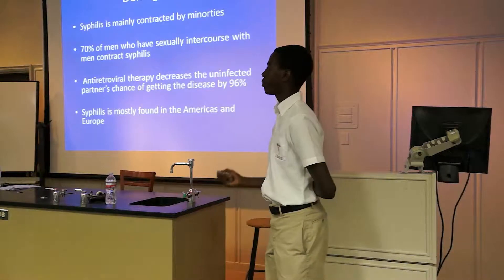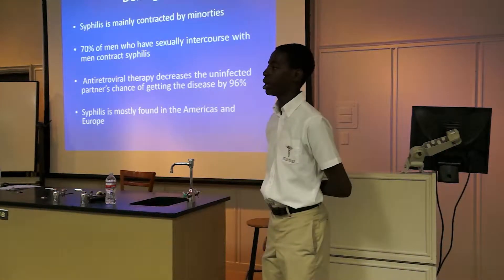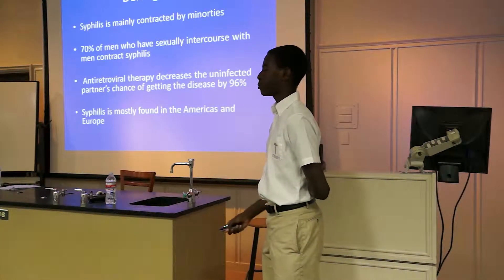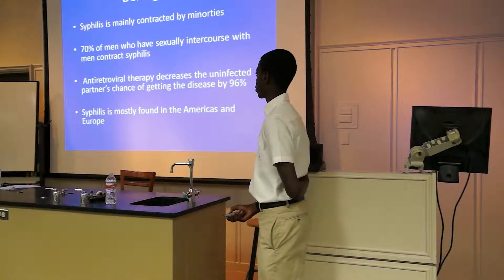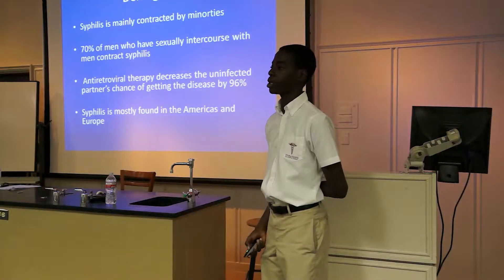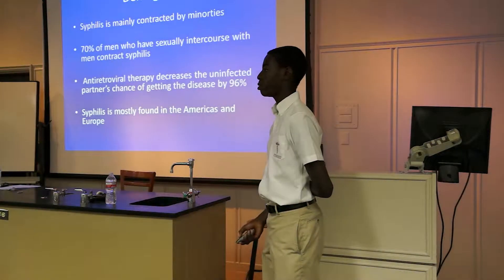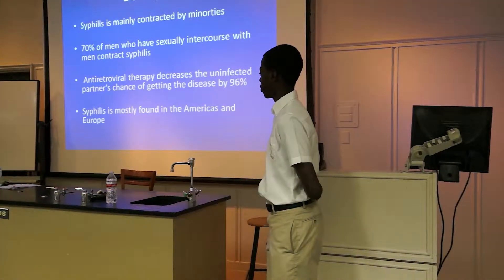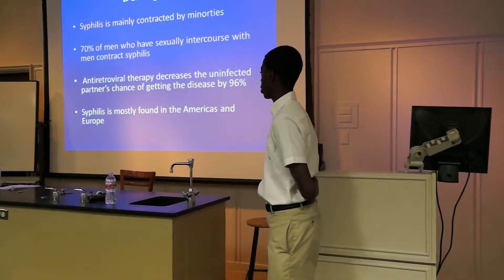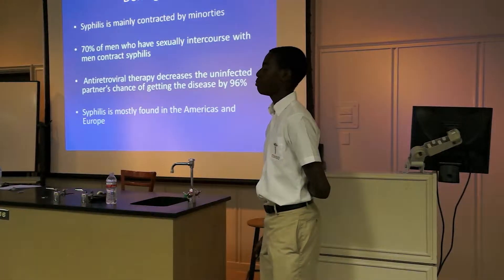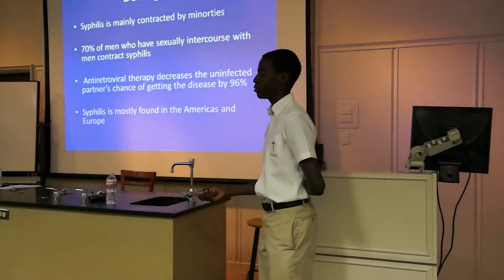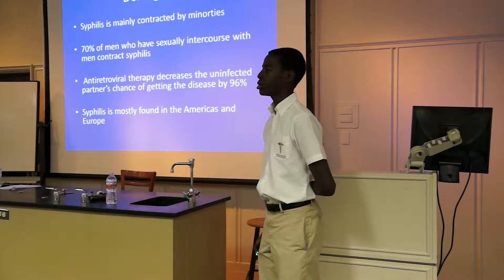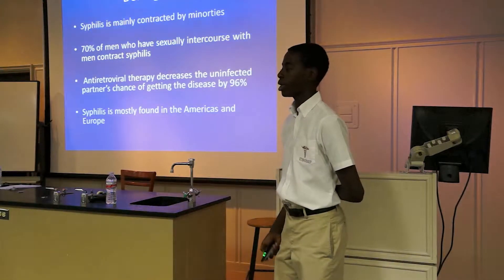Syphilis demographics. Syphilis is mainly contracted by minorities — mainly Black males and Hispanic males, and sometimes women. 75% of men who have sex with men end up contracting the disease. Antiretroviral therapy decreases an unaffected partner's chance of contracting syphilis by 96%. Syphilis is mostly found in the Americas and Europe, and rarely in South America.